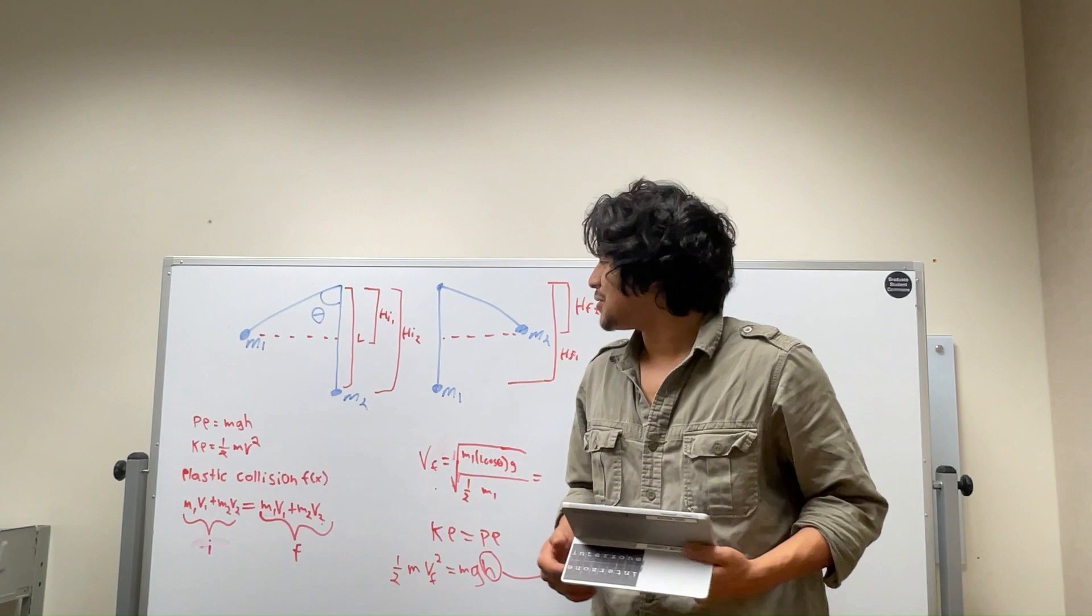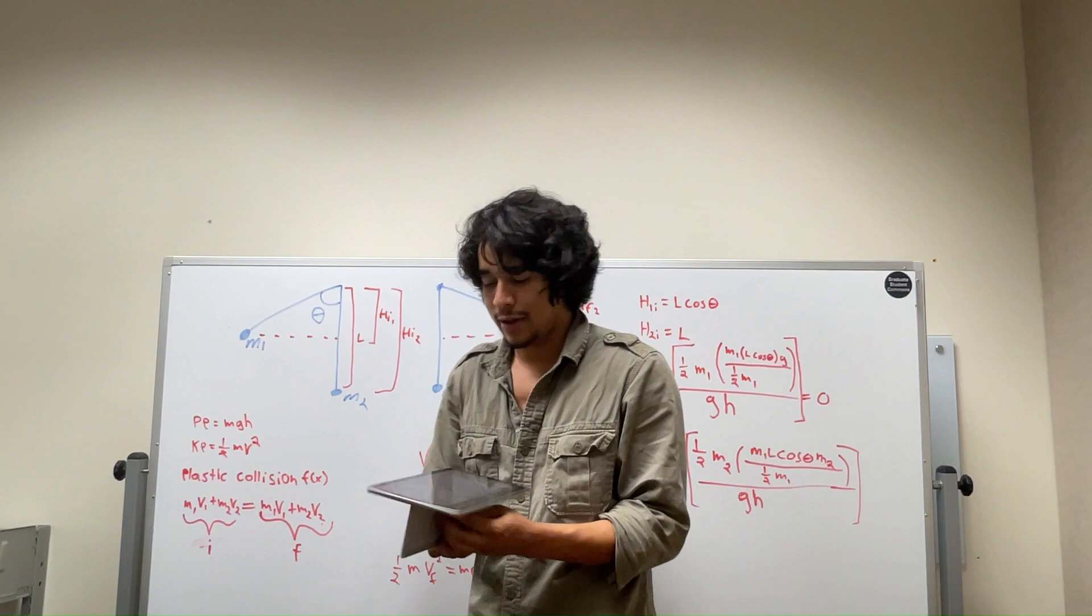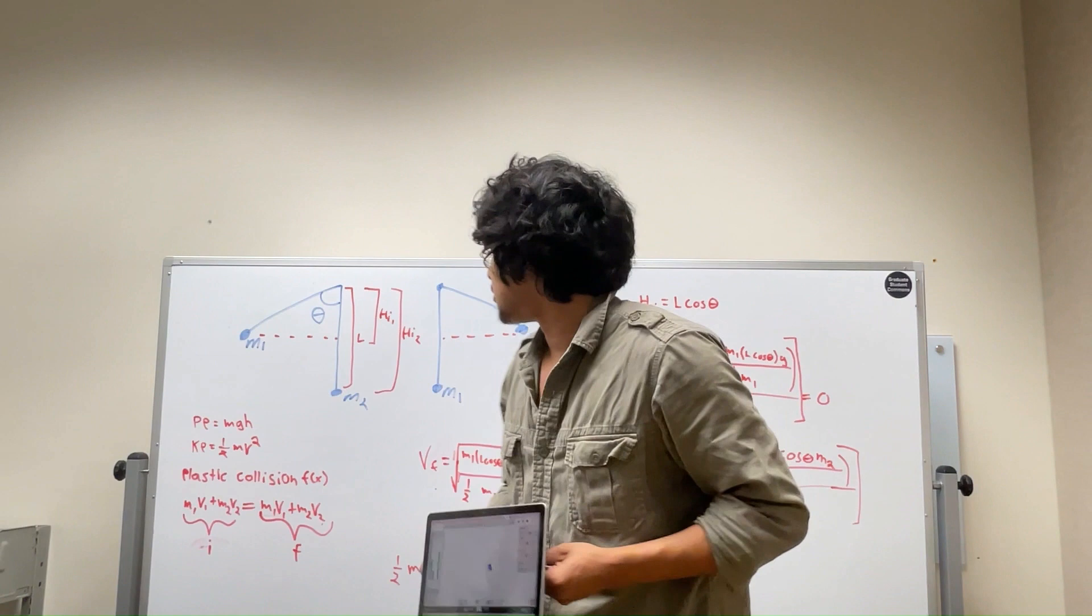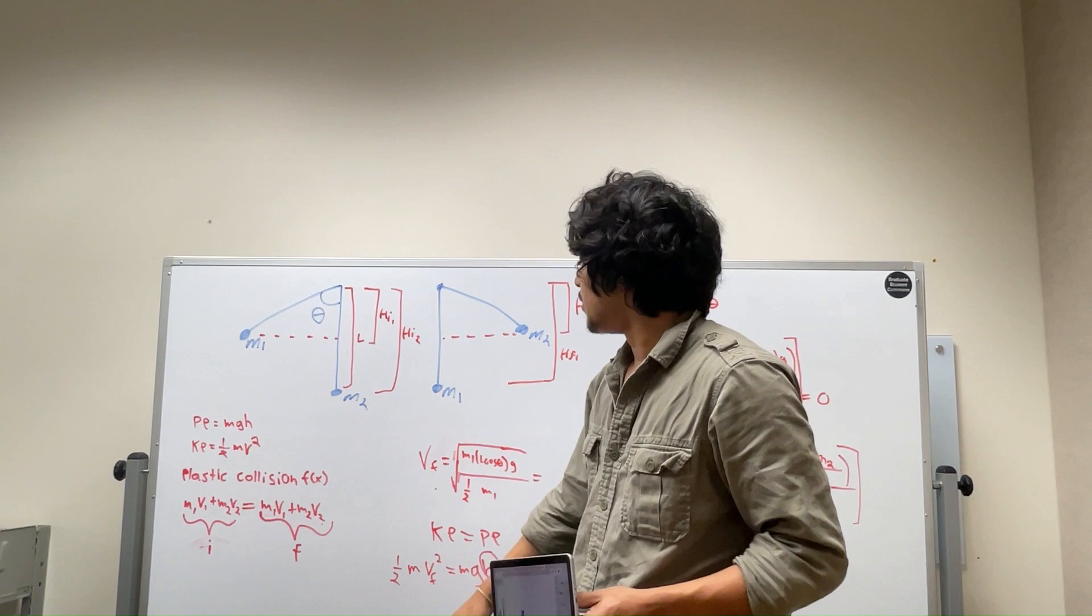The reason why this works is because we use the concept of the conservation of energy. With the conservation energy, we know that our potential energy, which can be shown in this little diagram right here with a small pendulum. Depending on how high up the pendulum is, you can see that our little graph here is changing kinetic energy into potential energy. With the conservation of energy, we know that the potential energy of mass 1 will have to equal the kinetic energy of the point of collision against mass 2.